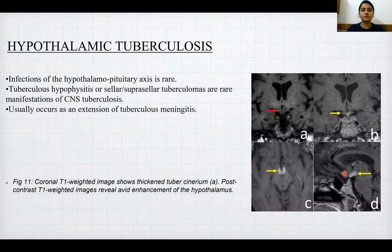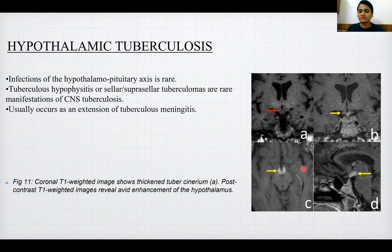Hypothalamic tuberculosis: infections of the hypothalamo-pituitary axis are rare; tuberculous hypophysitis or suprasellar tuberculomas are rare manifestations of CNS tuberculosis, usually occurring as an extension of tuberculous meningitis. In this case, coronal T1-weighted images show a thickened tuber cinereum, and post-contrast T1-weighted images reveal avid enhancement of the hypothalamus.